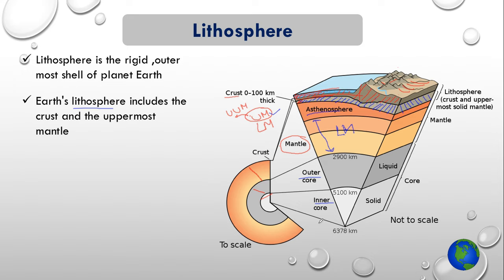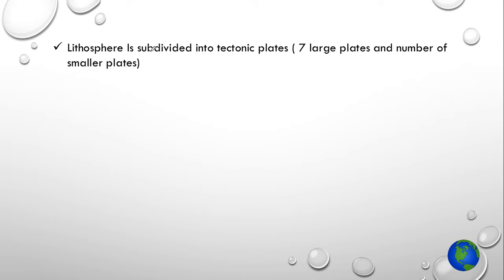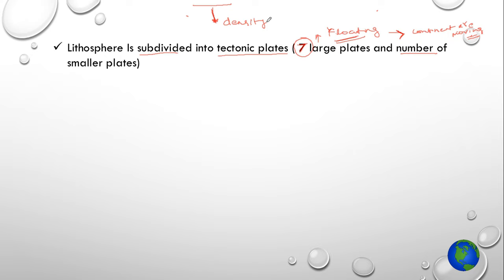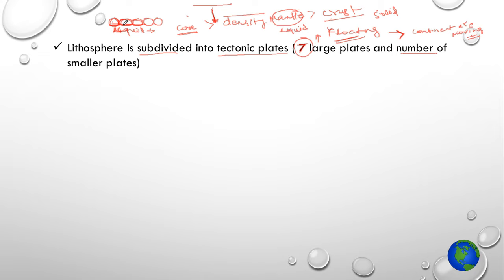Lithosphere is subdivided into tectonic plates. There are basically seven large tectonic plates and a number of smaller plates. These plates carry your continents, and that is how your continents are moving or floating above the mantle. As you move below the earth's surface, density keeps on increasing, which means the mantle has higher density in comparison to the crust. The mantle is in a liquid state whereas the crust is in solid state, so these plates with lower density float over the denser liquid mantle, just like a wooden log floating in a river.